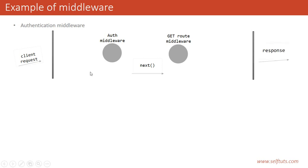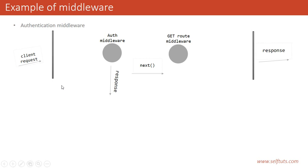If the authentication was successful, the get route middleware will give a successful response. But if an error occurs — the user doesn't exist in the database — the response will be given from the auth middleware itself. The request response cycle will not go to the next middleware because this middleware also has access to the response object. So if it sees an incorrect user is accessing the APIs, it gives the response from here. Using middleware, your coding pattern improves significantly, lines of code decrease, and a clean architecture is present.